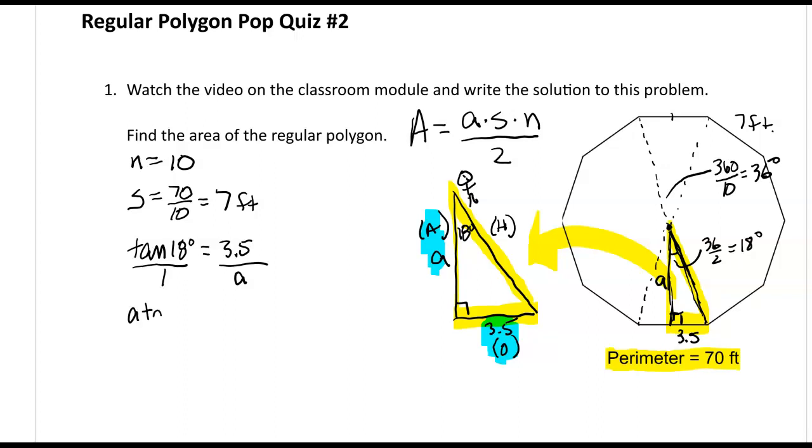So I have a tan 18 degrees is equal to 35. I'll divide by tan 18, divide by tan 18 over here. Okay, these are going to cancel out, and I'm going to be left with a is equal to, if I calculated that right on my calculator, it's 10.8. Feel free to double check me.